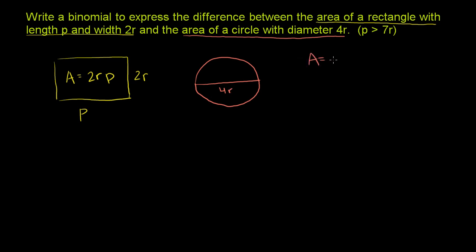Area is equal to pi r squared for a circle, where r is the radius. They gave us the diameter. The radius is half of that. So the radius here is going to be half this distance, or 2r. So the area of our circle is going to be pi times 2r, the whole thing squared. This is the radius right there. So we're squaring the entire radius.